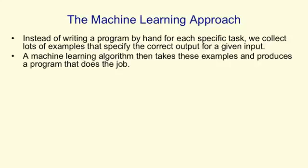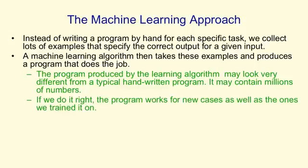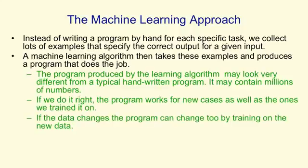The machine learning approach is to say, instead of writing each program by hand for each specific task, for a particular task we'll collect a lot of examples that specify the correct output for a given input. A machine learning algorithm then takes these examples and produces a program that does the job. The program produced by the learning algorithm may look very different from a typical handwritten program — for example, it might contain millions of numbers about how you weight different kinds of evidence. If we do it right, the program should work for new cases as well as the ones it's trained on. And if the data changes, we should be able to change the program relatively easily by retraining it on the new data.